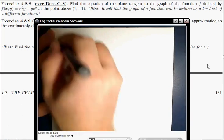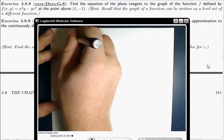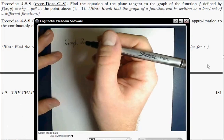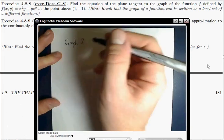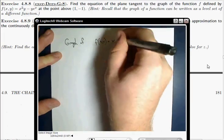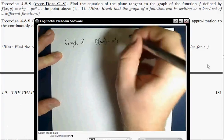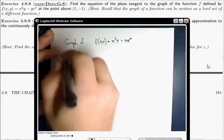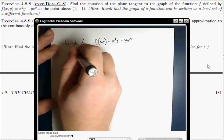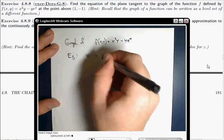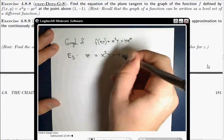So what we've got is we're looking at the graph of f. We've got f(x,y) is x squared y minus y e to the x. And that graph has the following equation: z equals x squared y minus y e to the x.